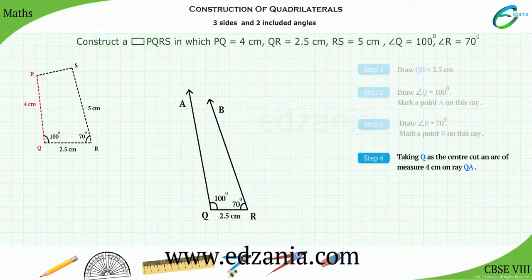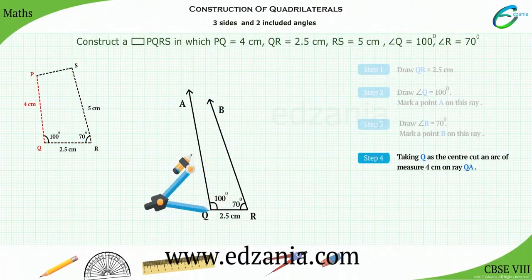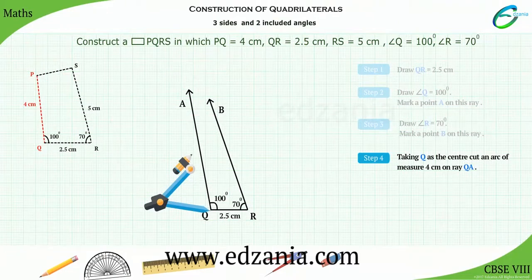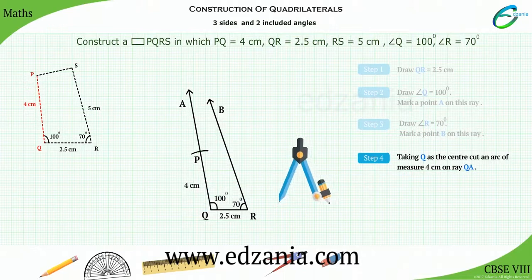Step 4. Construct PQ equal to 4 cm. Placing the compass pointer on point Q and taking the measurement of 4 cm, cut an arc of length 4 cm on ray QA. Name this point as point B.